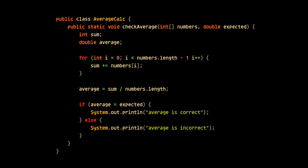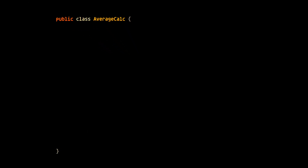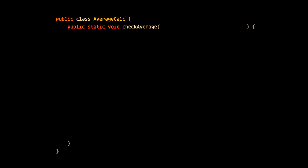Can you spot the four beginner mistakes in this code? Let's break it down a bit. We have an average calculator class here with a method inside of it that checks to see if the passed-in or expected average is correct for the given array of integers.